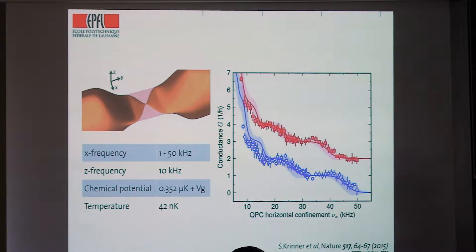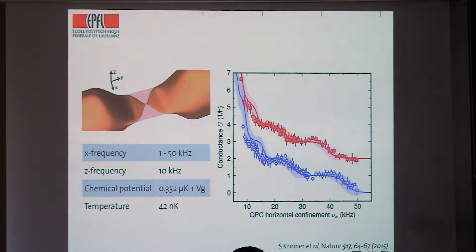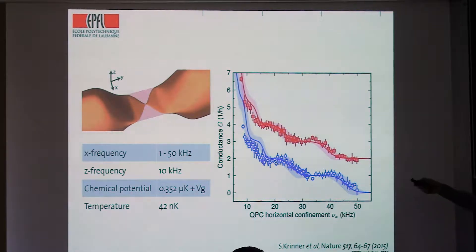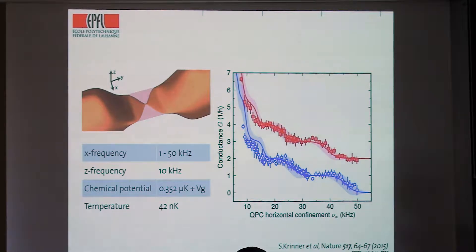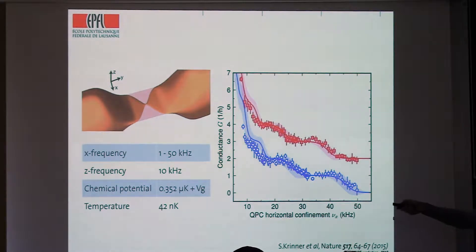This is the conductance of the structure measured as a function of confinement — the frequency in the transverse direction. We tune the chemical potential using the gate beam so that at the largest confinement (50 kHz) the point contact is completely closed. As we open the contact, conductance goes up and saturates to a value of 1/h — the conductance quantum for neutral particles. We measure current in particles per second and bias in energy units, so the quantum of conductance is 1/h rather than e²/h. It stays at 1/h until the second mode comes in, and then the third.